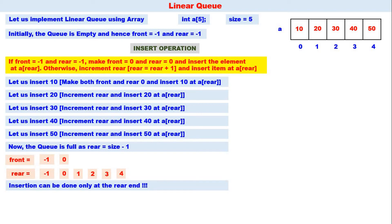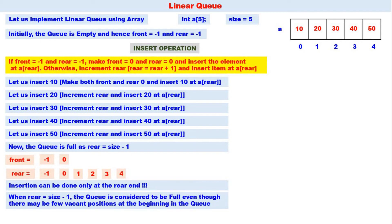Insertion can only be done at the rear end. When rear equals size minus one, the queue is considered full — even if there are vacant positions at the beginning of the queue. This is a disadvantage of the linear queue, and this disadvantage is overcome in a circular queue.